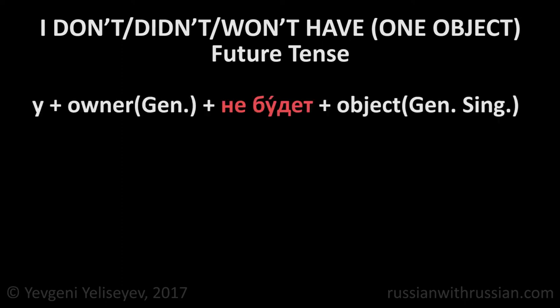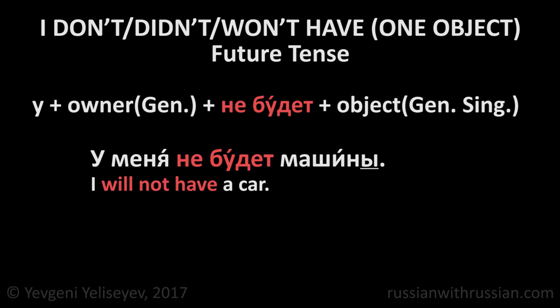And finally, to say that we will not have any objects, we use НЕБУДЕТ instead of НЕТ. У меня не будет машины. I will not have a car.